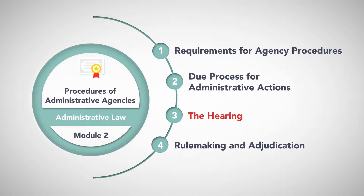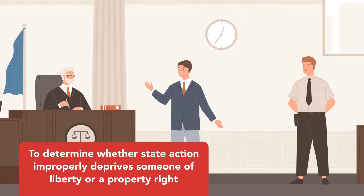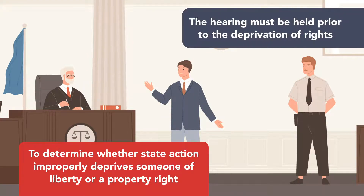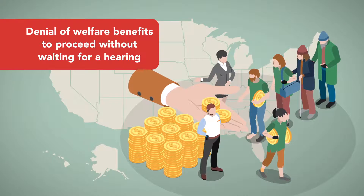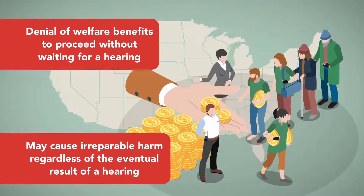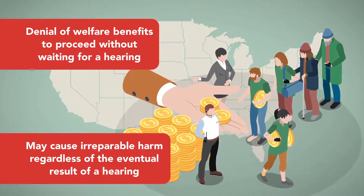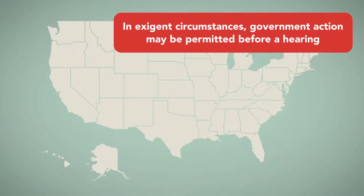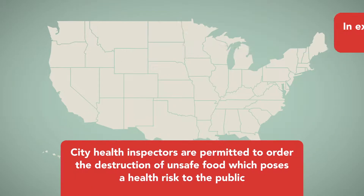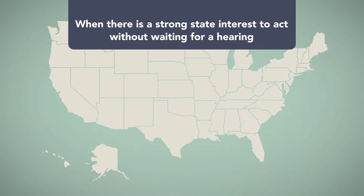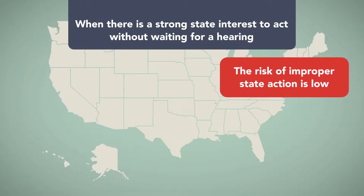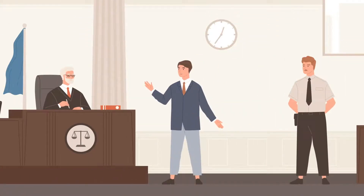The Hearing. Generally, when the law requires a hearing to determine whether state action improperly deprives someone of liberty or a property right, the hearing must be held prior to the deprivation of rights. Permitting state action, such as the denial of welfare benefits, to proceed without waiting for a hearing may cause irreparable harm, regardless of the eventual result of a hearing. However, in exigent circumstances, government action may be permitted before a hearing. For example, city health inspectors are permitted to order the destruction of unsafe food which poses a health risk to the public without waiting to hold a formal hearing. Likewise, when there is a strong state interest to act without waiting for a hearing and the risk of improper state action is low, hearings may be held subsequent to state action.